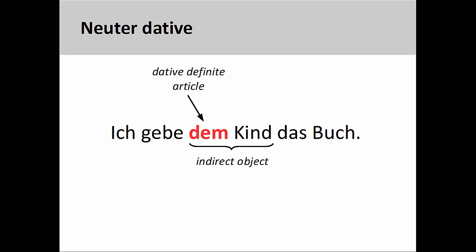And here is the neuter dative: 'Ich gebe dem Kind das Buch' — I give the book to the child. As you see here, the masculine and neuter dative have the same form, 'dem'.